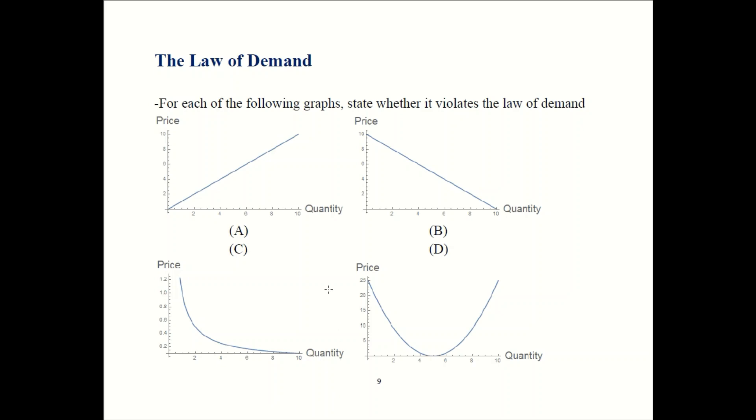Last graph, graph D. At first, when price goes up, quantity demanded falls. However, over here, when price goes up, quantity demanded rises. So that part of the graph violates the law of demand.